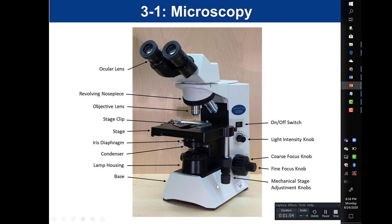We have the base of the microscope and the mechanical stage adjustment knobs. One set of knobs moves the stage left and right, and one set moves it front and back. We also have our focus knobs: the large coarse focus knob moves the stage up and down relatively quickly, whereas the fine focus moves the stage up and down very slowly. We use the fine focus to fine-tune the image once we find it with the coarse focus.